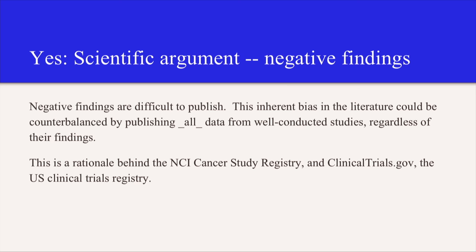There's another reason for sharing, negative findings. So negative findings are, if you're in science, you know negative findings are difficult to publish. That's unfortunate because they're findings. We want to know everything that happened. We don't only want to know the things that were positive. We want to know everything. So this inherent bias, the negative finding bias inherent in literature, it can be counterbalanced by publishing all data from well-conducted studies. We're only interested in whether you did the work well. We're not interested in whether you got a positive or negative p-value. That's not interesting. What's interesting is you did work and you produced data. Let's have it. So we're interested in all data from well-conducted studies, regardless of the findings. And this is the rationale. So there has been some good work done on this. This is the rationale between the NCI Cancer Study Registry and clinicaltrials.gov, the U.S. Clinical Trials Registry. Now, whether you could get the data is another issue, but at least you know that there was a study going on and you would know what the findings might be. And that helps you track down some things.